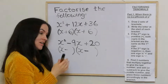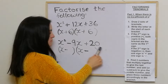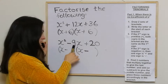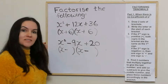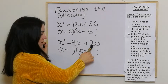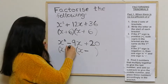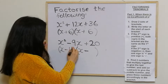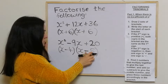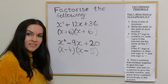We're looking for two numbers that multiply together to give 20 and either add or subtract to give 9. Right away, I know it's going to be four and five, because four times five is 20 and four add five is nine.